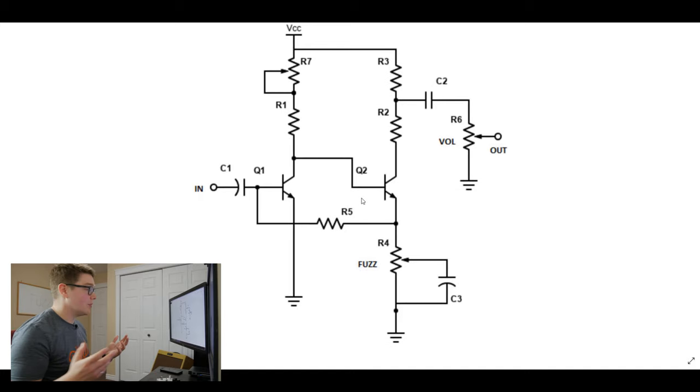Here's another common mod. This one would be a biasing mod. So you can see here I've added R7, which is an additional potentiometer here to play around with the biasing on the collector of Q1. So as you change that, you can put the biasing maybe a little bit lower, a little bit higher. And then what R1 is doing in this case is essentially making sure that you don't set it too low or too high.